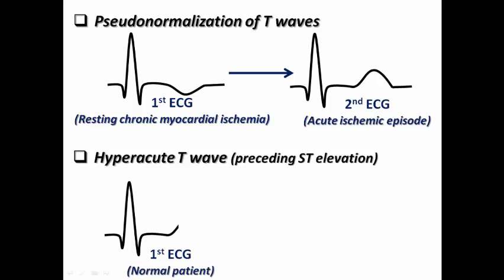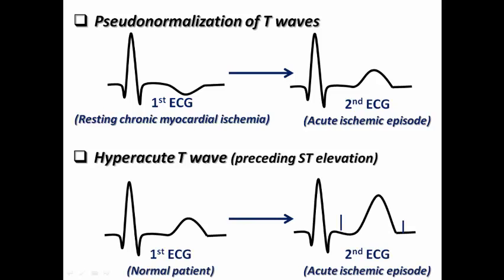Pseudonormalization is different from hyperacute T wave. In hyperacute T wave, the baseline ECG shows a normal positive T wave and then during the ischemic episode the T wave becomes hyperacute — more than two-thirds of the QRS amplitude, as we learned before. So there is a difference between pseudonormalization of T wave and hyperacute T wave, although pseudonormalization may precede ST elevation in some cases.